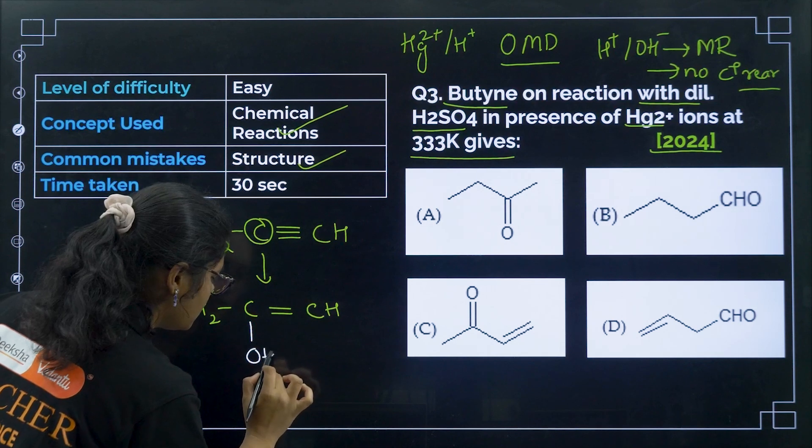Question 15 from 2021 — another aldol condensation. Benzaldehyde has no alpha hydrogen, so it cannot attack. Instead, the alpha hydrogen of the other aldehyde attacks the carbonyl carbon of benzaldehyde. After dehydration, we get a product with a new double bond. The correct answer is option number B.